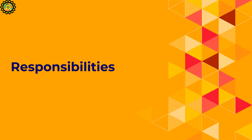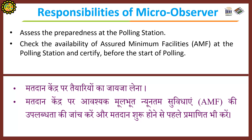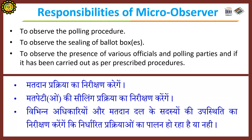Responsibilities of the Micro-Observer include assessing the preparedness of the polling station, checking the availability of assured minimum facilities at the polling station and certifying before the start of polling, observing the polling procedure, observing the sealing of ballot boxes, and observing the presence of various officials and polling parties to ensure it has been carried out as per prescribed procedure.